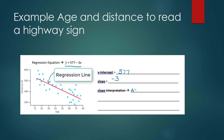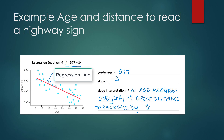To write a slope interpretation: our x variable is age, so we say 'as age increases one year' — the unit for age is year. We expect distance — our y variable — to decrease, because the sign of slope is negative, by 3 feet. The feet unit comes from the y-axis. So by 3 feet is our slope interpretation.